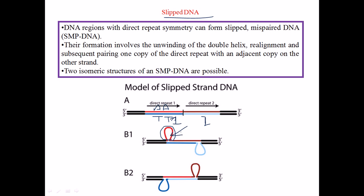This is called slipped DNA because parts of the DNA sequence are being looped out — slipped — at the time of bond formation. The same process can occur at another point, where a region slips and makes a bulge-out structure like a balloon, while the rest of the strand is still able to form bonds.